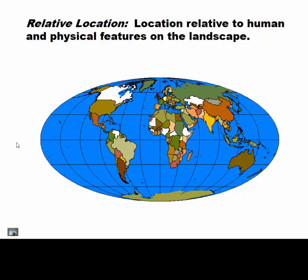Relative location is relative to human and physical features on the landscape. If I were to tell you latitude and longitude, most people have little idea what those represent on the face of the earth. So we use relative location — like 23 Main Street, Fredericksburg, Virginia. What your phone does is turn that into an absolute location with a latitude and longitude on the map.